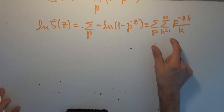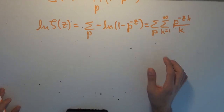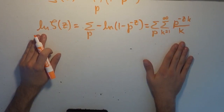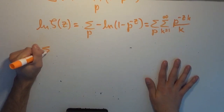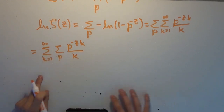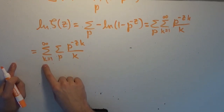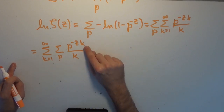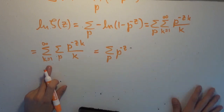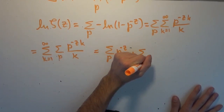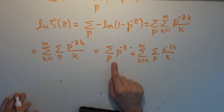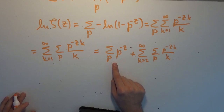So we're going to end up with a double sum. By substituting, this is equal to the double sum — first over the prime numbers, then the sum from k equals 1 to infinity of p to the minus zk over k. I'm going to pull out the first term where k equals 1, which gives just the sum over the primes of p to the negative z. And the rest is the sum from k equals 2 to infinity over the primes of p to the minus zk over k. This first part is the sum over the reciprocal prime powers, which is the prime zeta function.